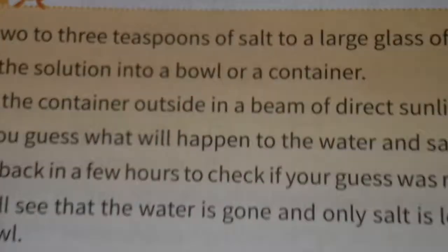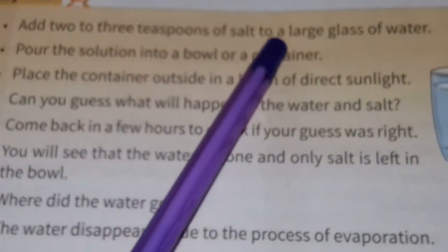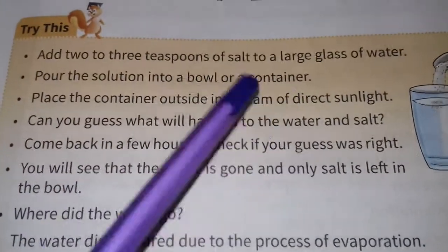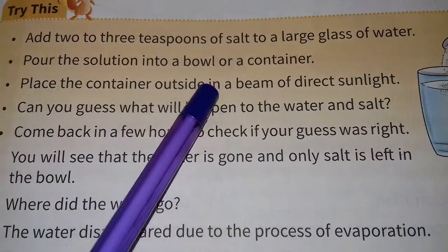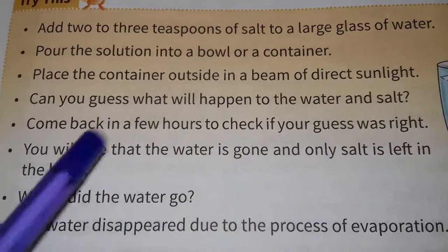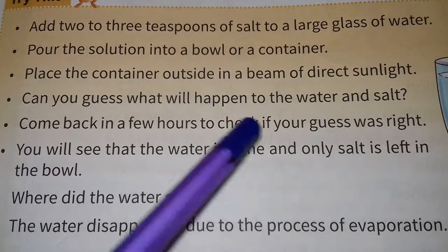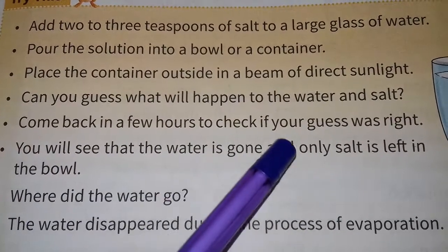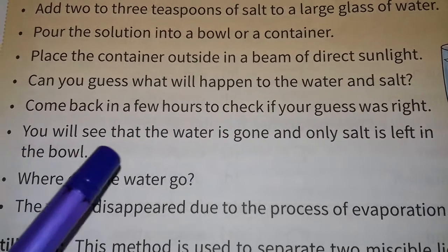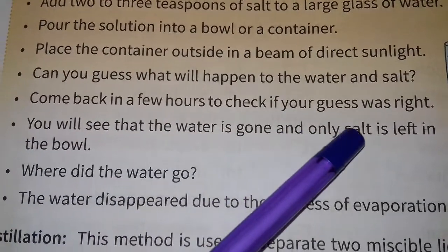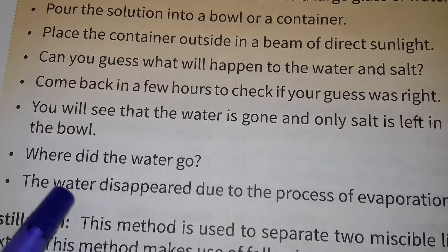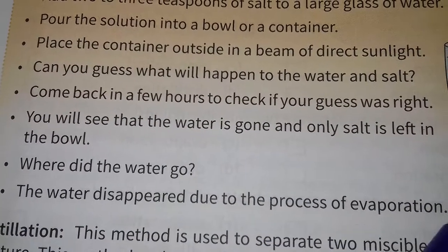You can try this: add 2 to 3 spoonfuls of salt to a large glass of water. Pour the solution into a bowl or container. Place the container outside in direct sunlight. You will see that the water is gone and only salt is left in the bowl. The water disappeared due to the process of evaporation.